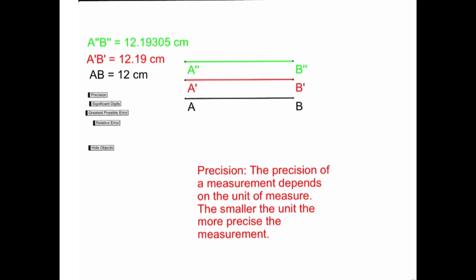And then the green line, we can count up, we're measuring to the tenth, hundredth, thousandth, ten-thousandths, hundredth-thousandths. So this green line has been measured to the ten-thousandths of a centimeter. Although all three lines are the same length.